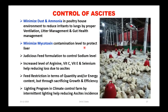Minimize mycotoxin contamination to protect the liver. Use judicious feed formulation to control sodium levels. Increasing levels of arginine, vitamin C, vitamin E, and selenium helps reduce losses due to ascites. Feed restriction — when birds are already suffering from ascites, you can restrict feed quantity or energy. Either reduce energy or give a lower quantity, but this comes at the cost of sacrificing body weight growth and higher FCR. Lighting programs in EC houses can also help reduce the ascites problem.